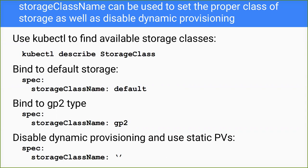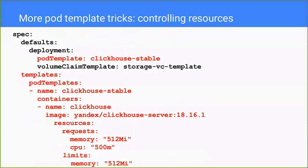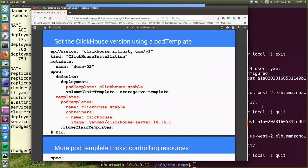We'll use dynamic provisioning as it's easiest. We'll return to storage management in detail in future webinars. In addition to defining storage, it would be nice to define what version of ClickHouse we're using and perform upgrades — since storage persists, it should survive an upgrade. We do this with a pod template, which sets pod properties including memory, CPU allocation, and the image version. We'll specify the 18.16.1 server to demonstrate upgrading.